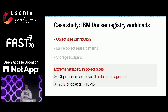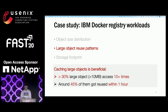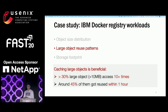We found some interesting insights in three points. First, object sizes are extremely variable, spanning over nine orders of magnitude from several bits to multiple gigabytes, and 20% of objects are larger than 10 megabytes. Second, more than 30% of large objects are accessed more than 10 times. And around 45% of large objects — meaning objects larger than 10 megabytes — are reused within one hour. So we believe it benefits to cache large objects in case they will be accessed soon.